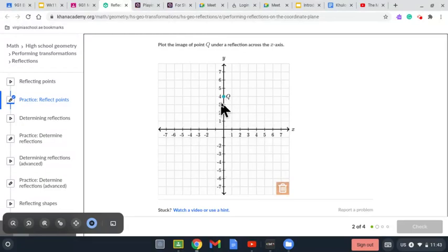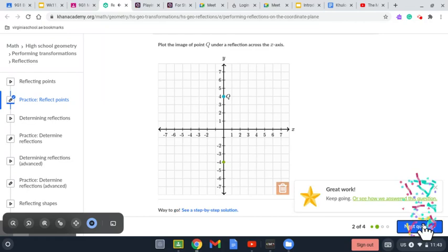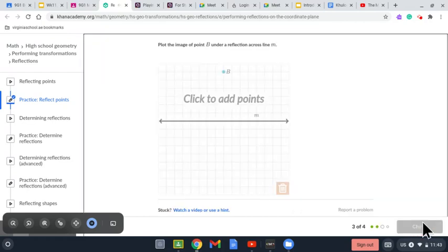So we count how many boxes? 1, 2, 3, 4. We count here. 1, 2, 3, 4. We put a dot in here. Let's see. Again.